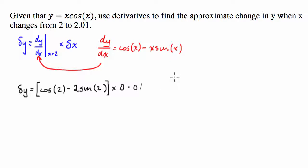So what we do is we get our calculators out, and we're going to say that delta y then is going to be equal to, we've got cosine of 2 is equal to negative 0.416.